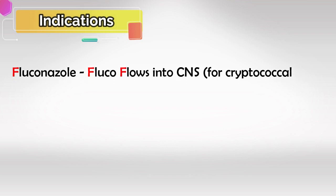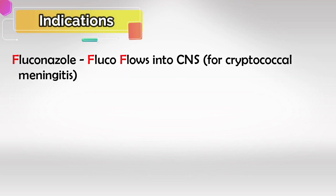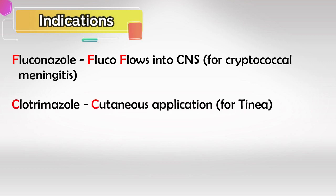Now indications are the most important part. They're all antifungal, so they're all used to treat fungal infections, but certain medications work best for certain infections. For example, fluconazole works best for CNS infections — remember, 'Fluco flows into the CNS.' Clotrimazole is used for cutaneous infections.